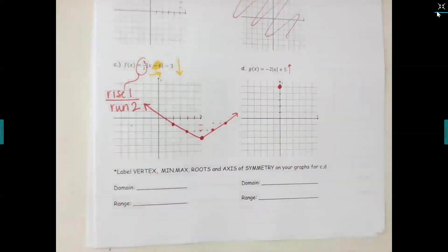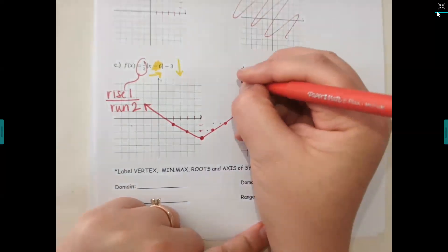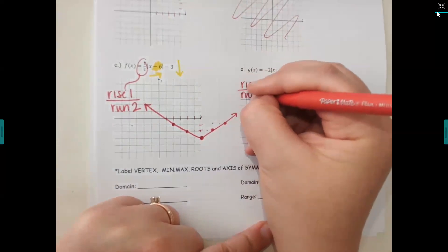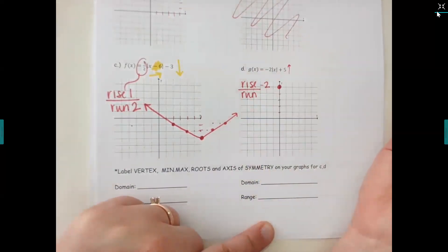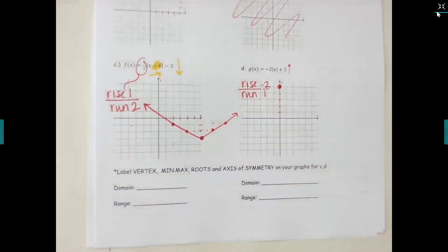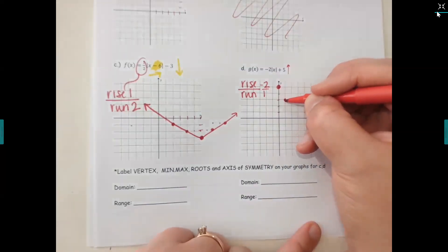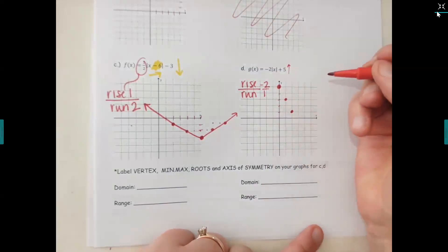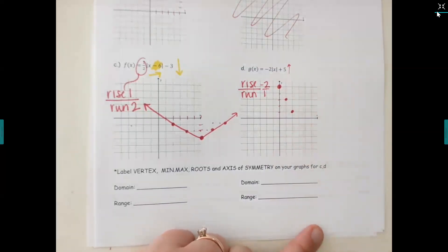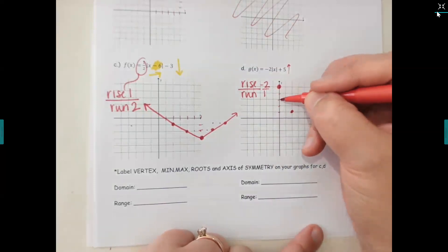If there's not a number with x, you're not going to move it side to side. The slope is negative two. Negative two is a whole number, so put a one on the bottom — that means go down two and then over one. Go down two, over one a couple of times going forward, then go back to your center dot and make the other half of the V going down two and over one the other way.